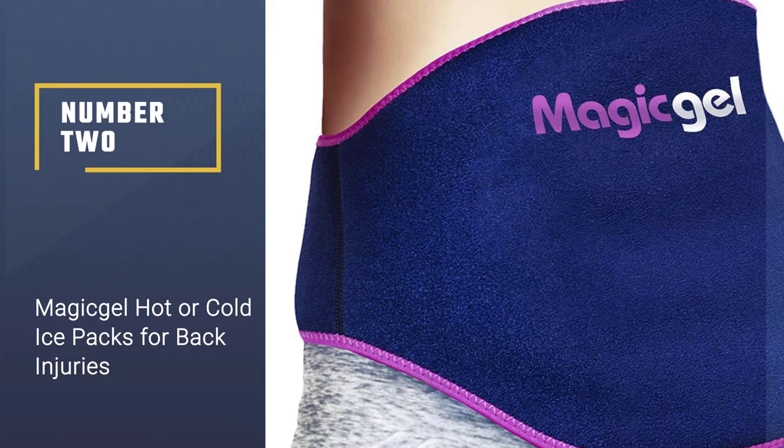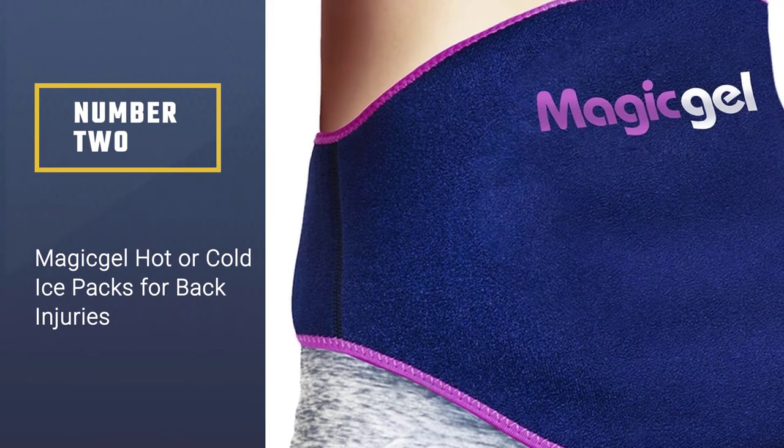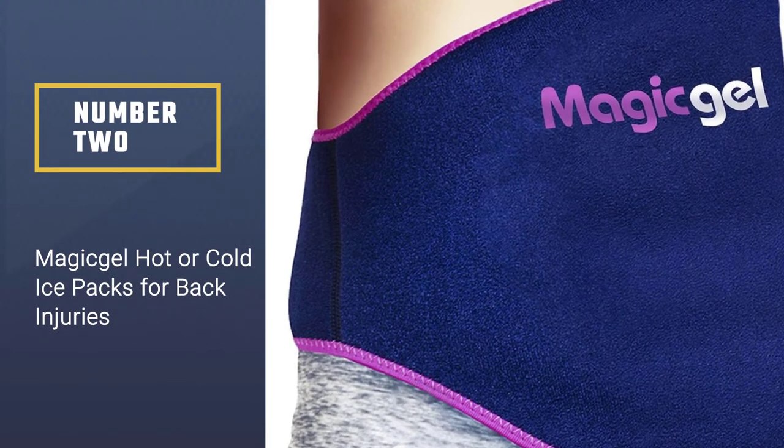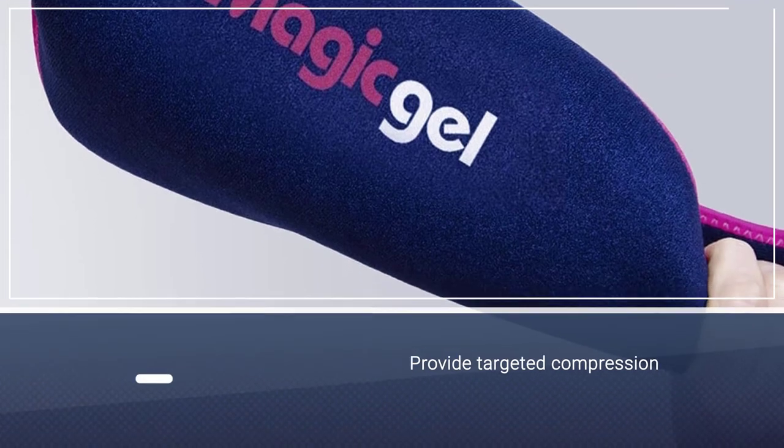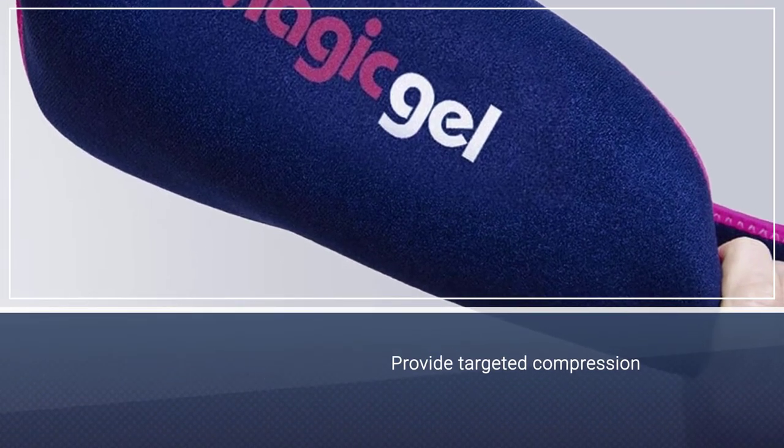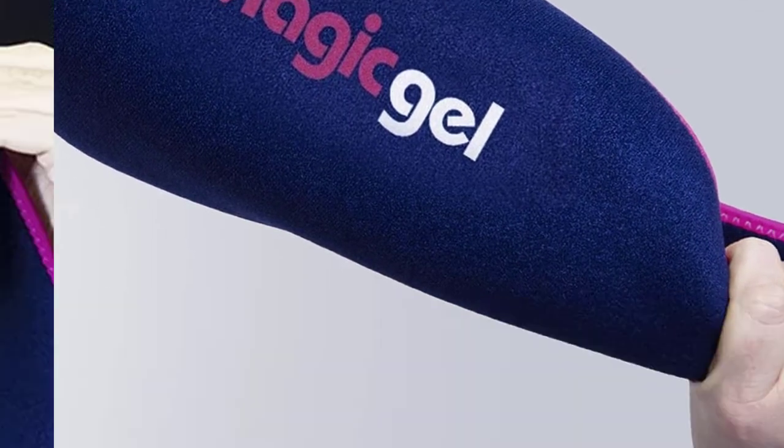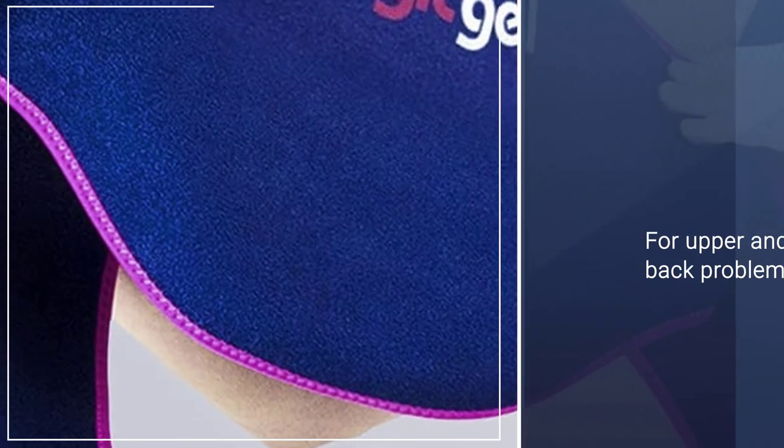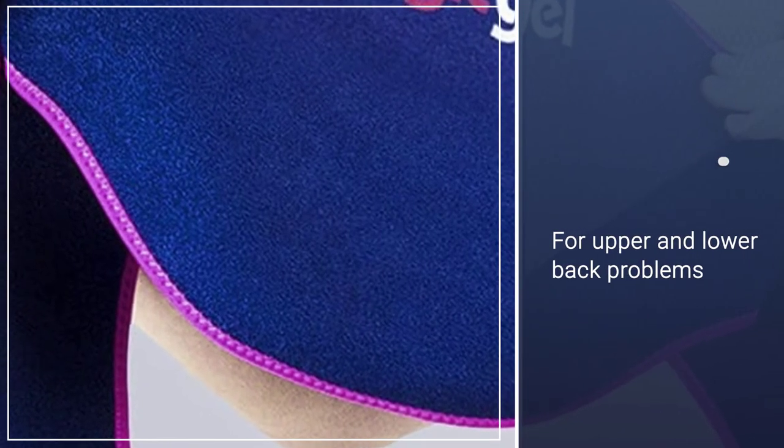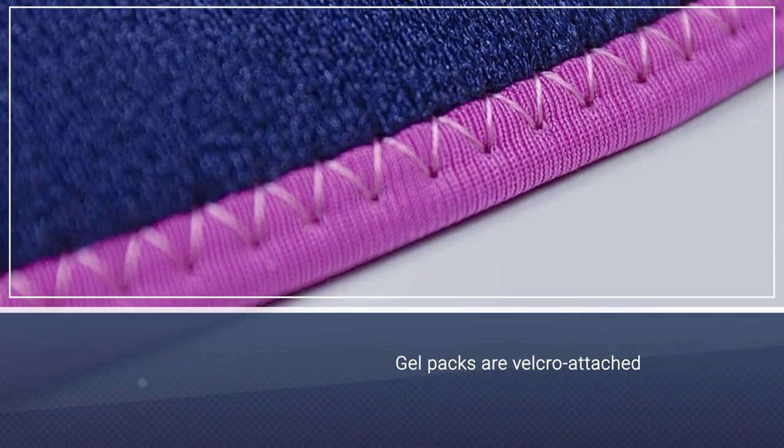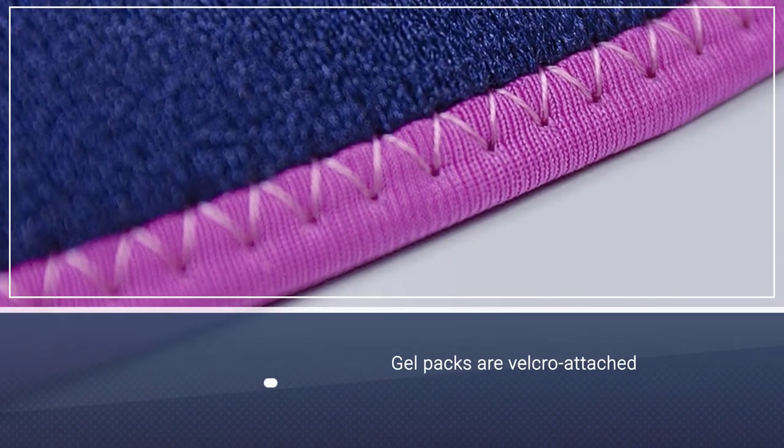Number two, Magic Gel hot or cold ice packs for back injuries. The best approach to decrease inflammation according to spinal therapists is to use heat and cold packs for therapy. The Magic Gel pad and strap provide targeted compression for upper and lower back problems. The gel packs are velcro attached and curve over your belly and sides around the waist.